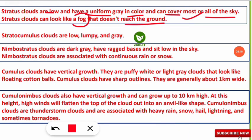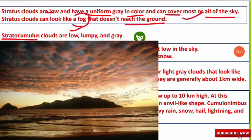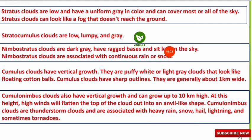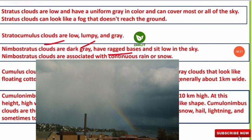Stratocumulus clouds are low, lumpy, and gray in color — they have lumps as visible in images. Nimbostratus clouds are dark gray with ragged bases and sit low in the sky. These clouds are associated with continuous rain or snow, so if a question asks about continuous rain or snow, select nimbostratus clouds.